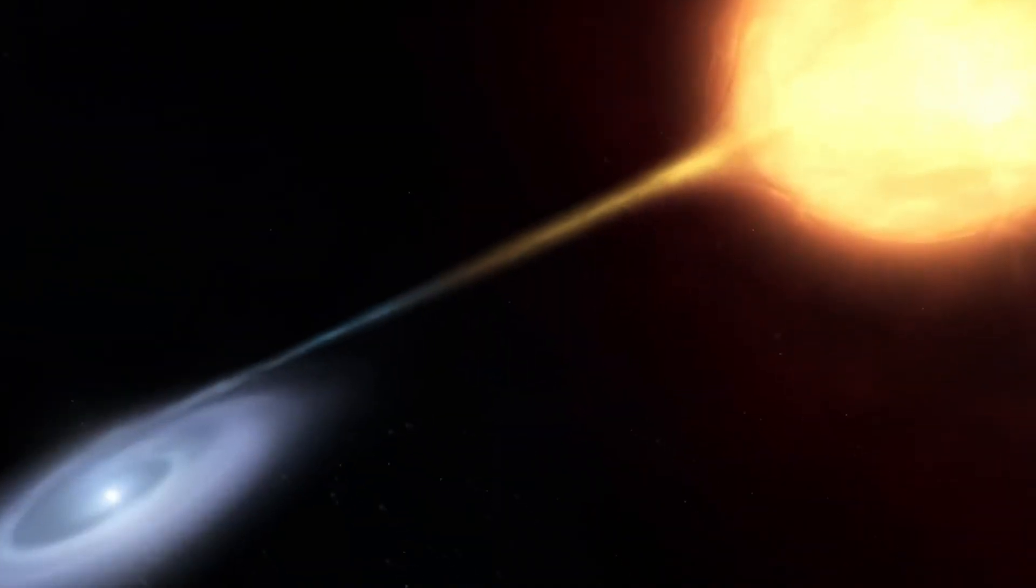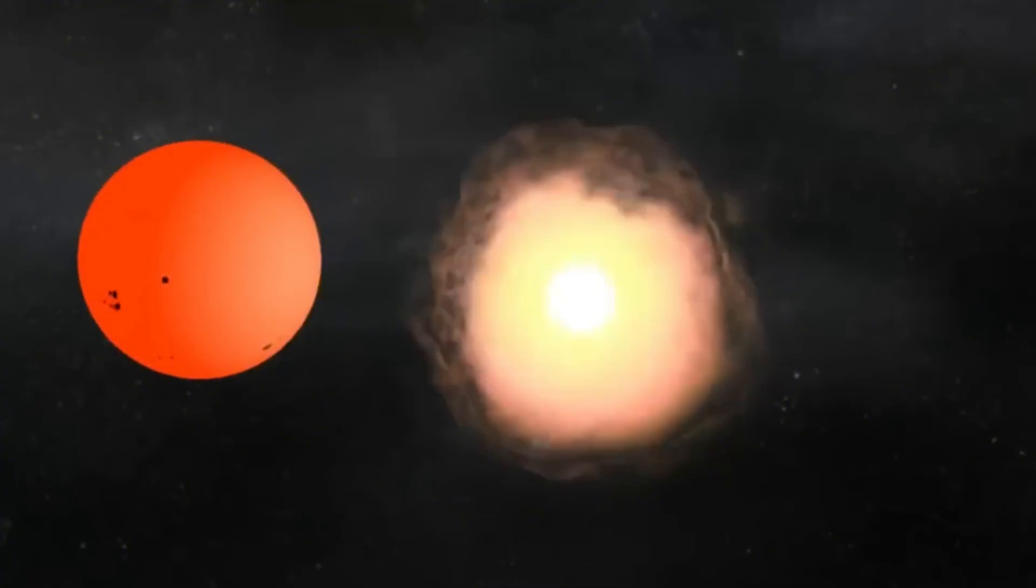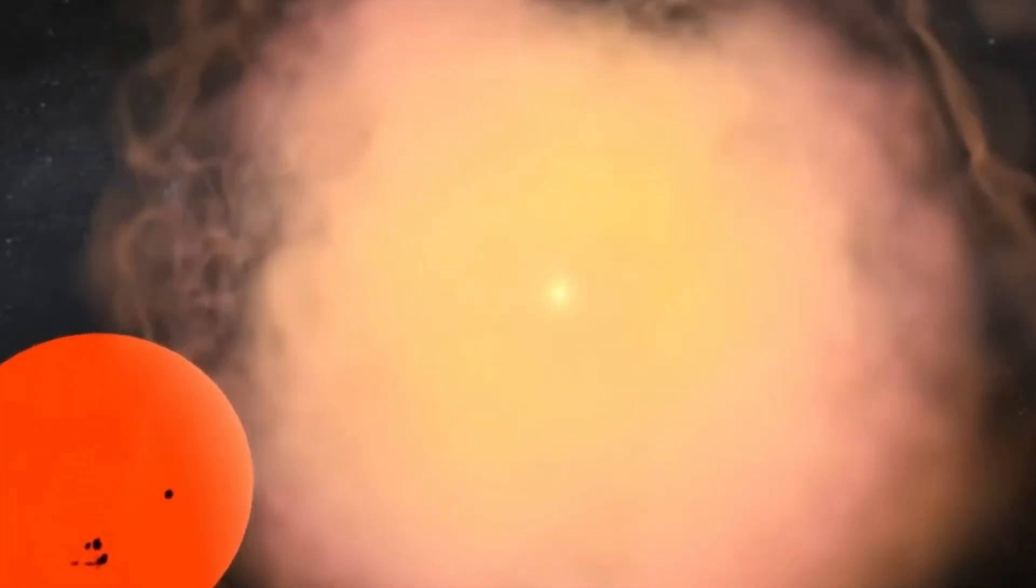When enough hydrogen accumulates on the white dwarf surface, a thermonuclear explosion, known as a nova, occurs, causing a dramatic increase in brightness visible from Earth.